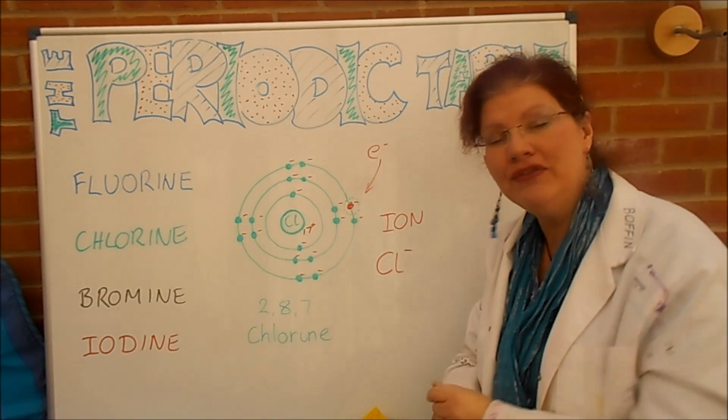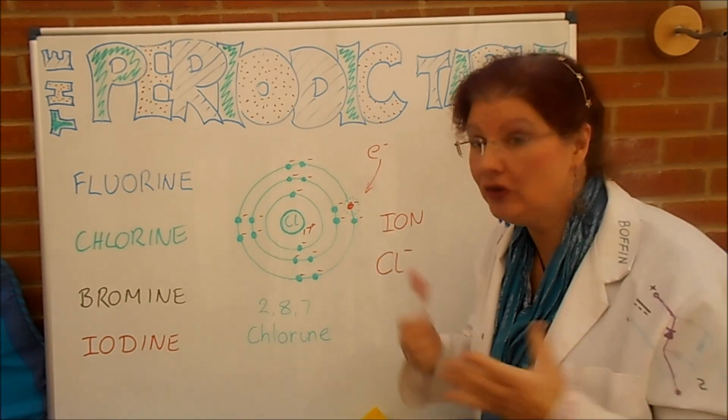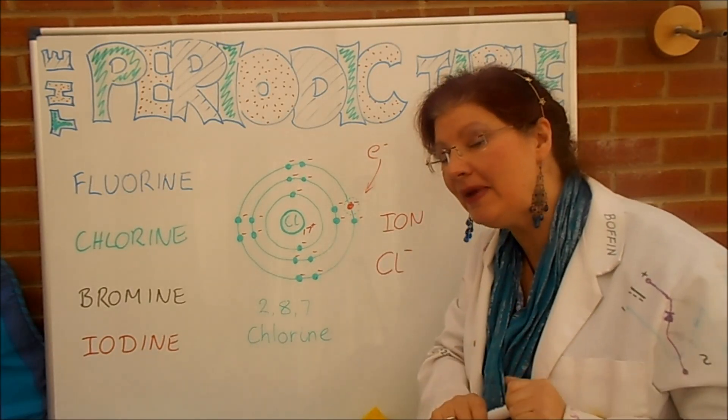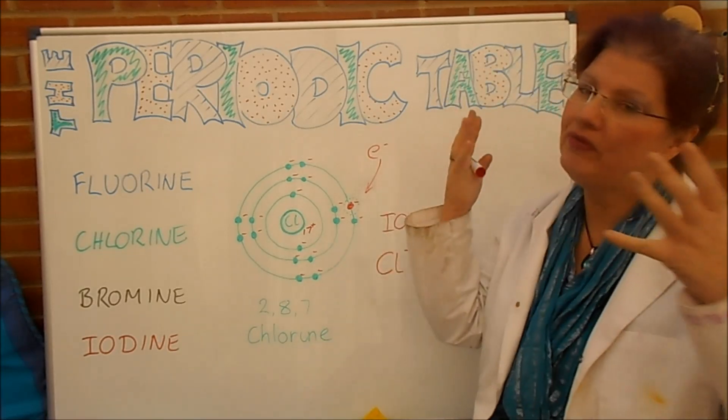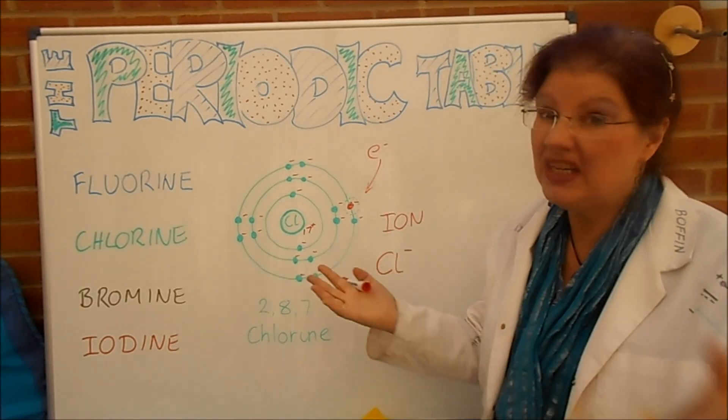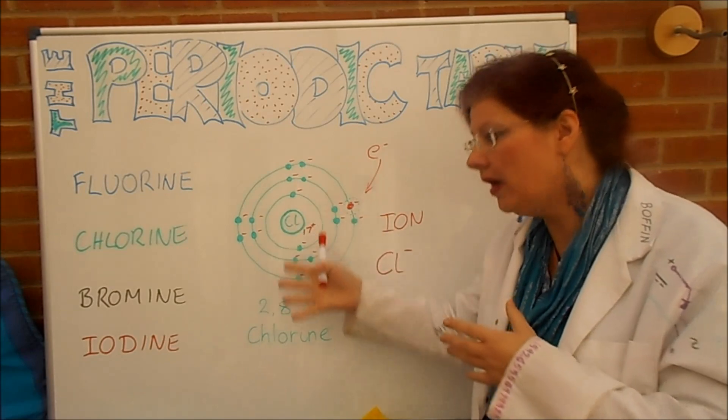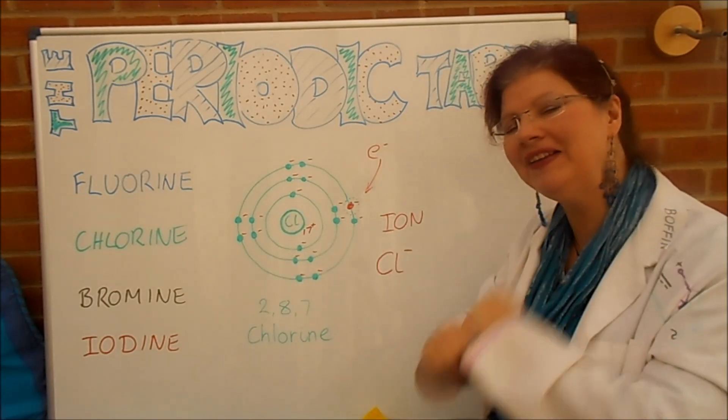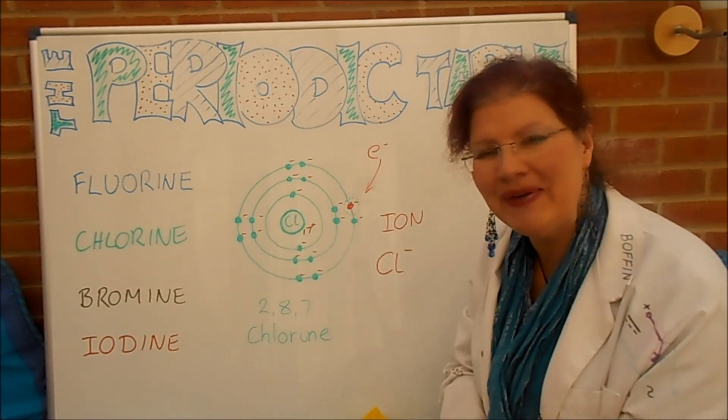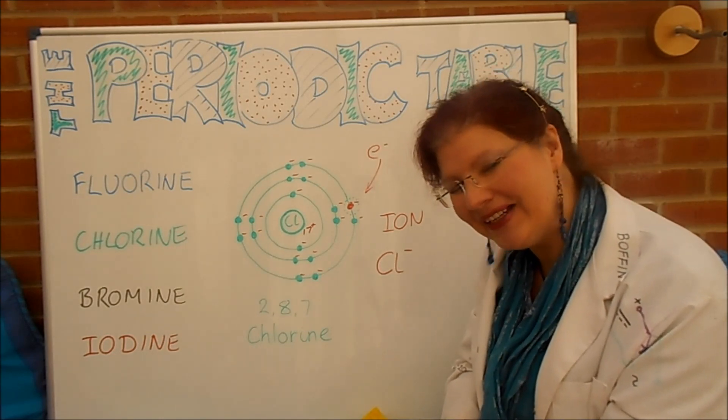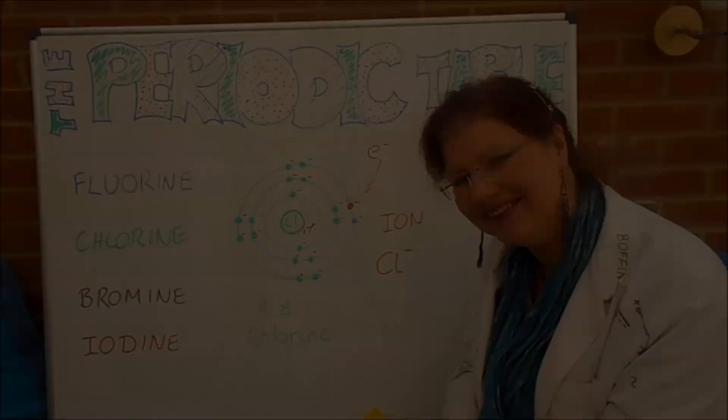Now in other videos we're going to talk about how these ions bond to other things with ionic bonding. Also a little bit about covalent bonding. Some of the reactions that occur when they're making sodium chloride, for example, or sodium iodide, sodium bromide, all the various different things. So pop back to some other videos. We'll talk a little bit more about the halogens there. And I'll see you again, Batty fans. Bye for now.